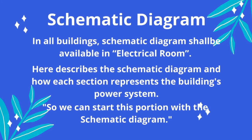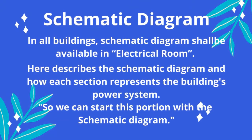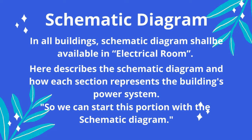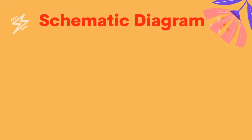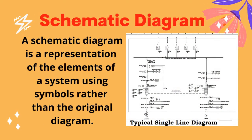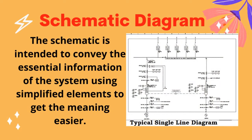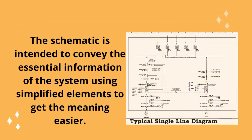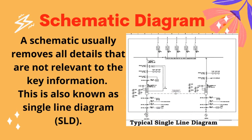In all buildings, a schematic diagram shall be available in the electrical room. Here we describe the schematic diagram and how each section represents the building's power system. A schematic diagram is a representation of the elements of a system using symbols rather than the original diagram. It is intended to convey the essential information of the system using simplified elements to make the meaning easier to understand. A schematic usually removes all details that are not relevant to the key information. This is also known as a single line diagram.